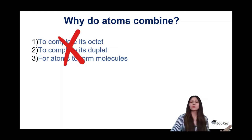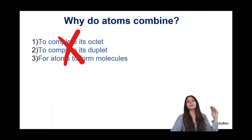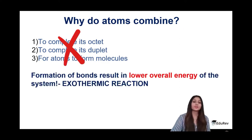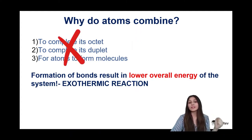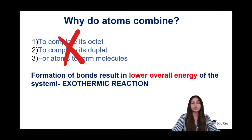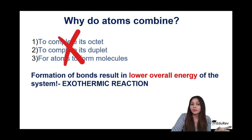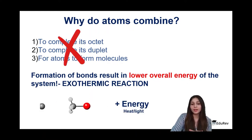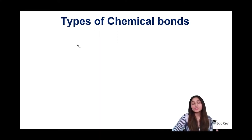Everybody wants to be in a lower energy state — even we want to be settled and stable in life. The same applies to atoms. Atoms want to be at lower energy states or stable states, and that is what happens when they combine to form molecules. When any kind of bond is formed, it results in a lower overall energy of the system. Since energy is conserved, this lost energy goes into the environment, which is why bond formation is always an exothermic reaction.